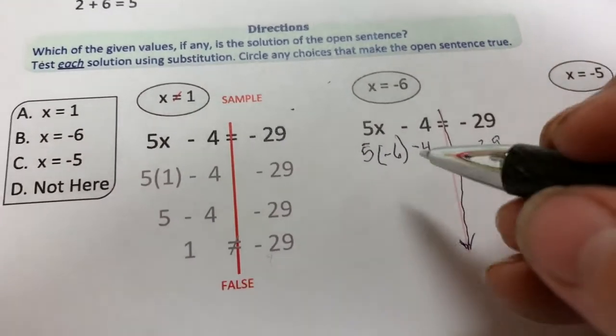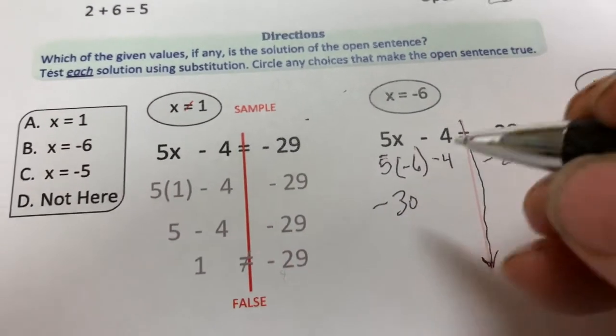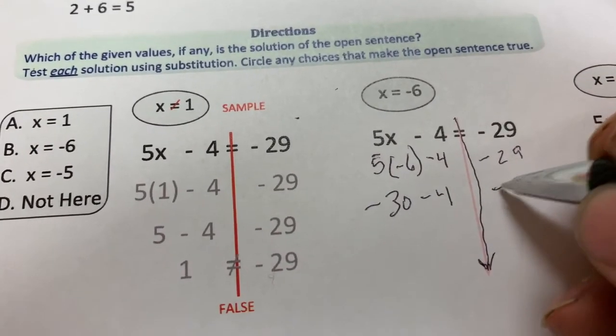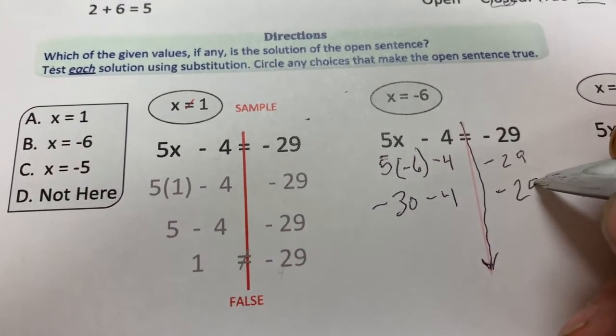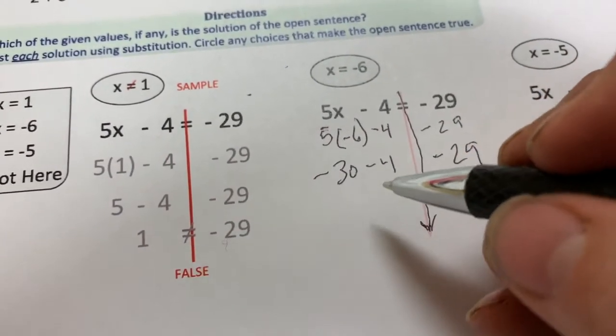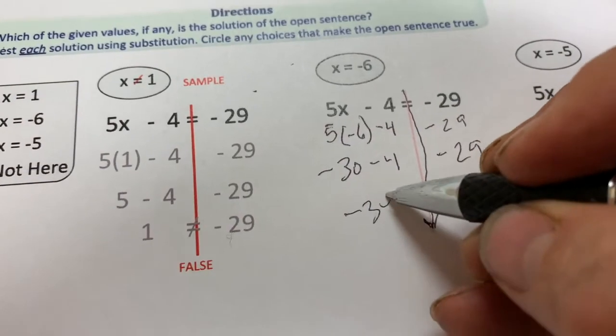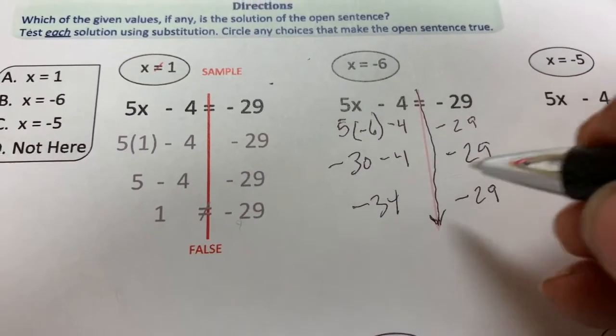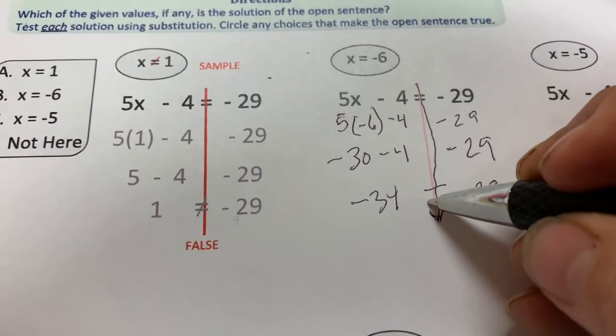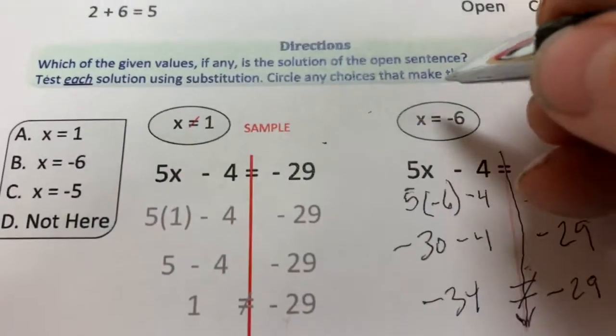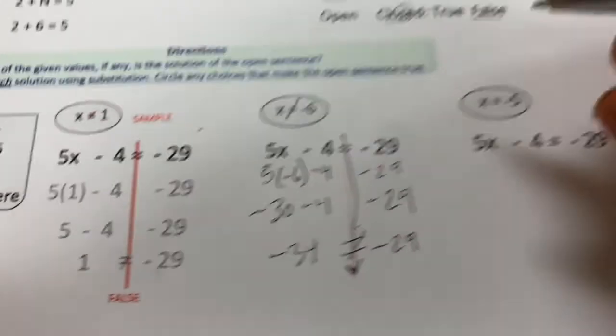Now, let's evaluate this a little bit. That would be negative 30 minus 4. And over here, negative 29. Negative 30 and a negative 4 makes negative 34. And over here, we've got negative 29. Well, these are not equal. So, I'm going to put that not equal sign in. I'm going to go ahead up here and say that's not equal.